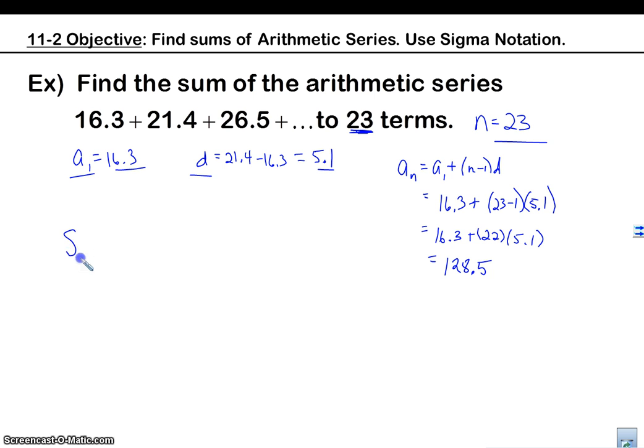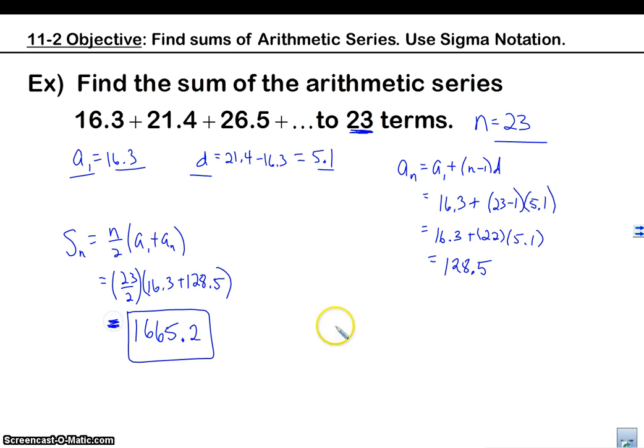Okay, so now that I have a_n, now I can go get my sum. Okay, n over 2 times a_1 plus a_n. So n here is 23 divided by 2, a_1 was 16.3 plus a_n was 128.5. Put that in our calculator, bada bing, bada boom. We're going to get, I'm putting in my calculator here, 1665.2. All right. Bada bing, all right.